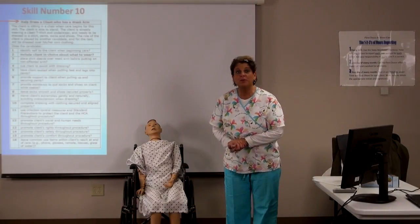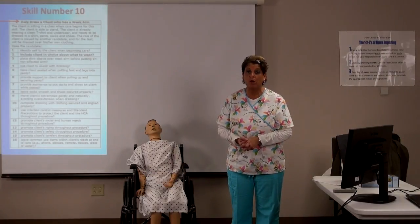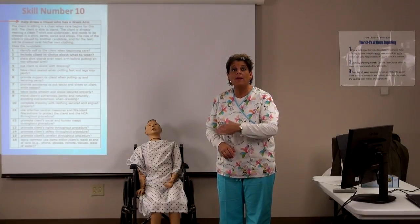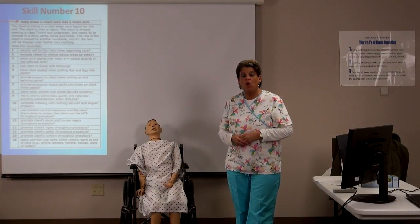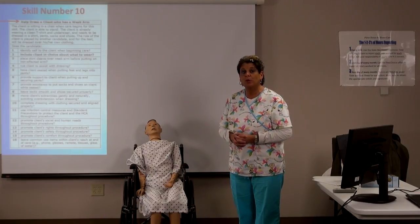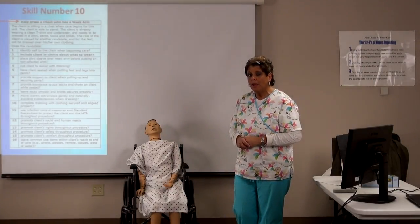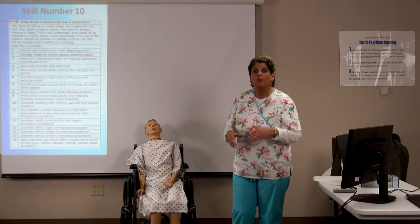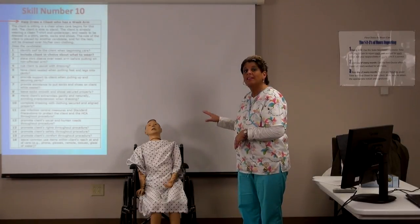So we're back. The skill we're going to learn now is skill number 10, which is how to address a client who has a weak arm. For testing purposes, the proctor will tell you what side is the weak arm — for instance, they'll say you're going to address a client with a right weak arm. Keep in mind which side they said is weak. It's only the weak arm. For our training purposes, we're going to say the client has a weak left arm.